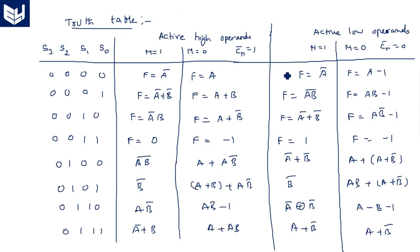VHDL code can be written in behavioral style, dataflow style, or structural style. For writing structural code for ALU-type devices it is very difficult because they have multiple functions. Looking at the truth table, there are several operations — multiple functions. Implementing such multiple operations using structural code is very difficult because of the complexity. That is why arithmetic and logic units must be described using the behavioral model. The behavioral model is the best way to represent any type of logical function with conditional statements.